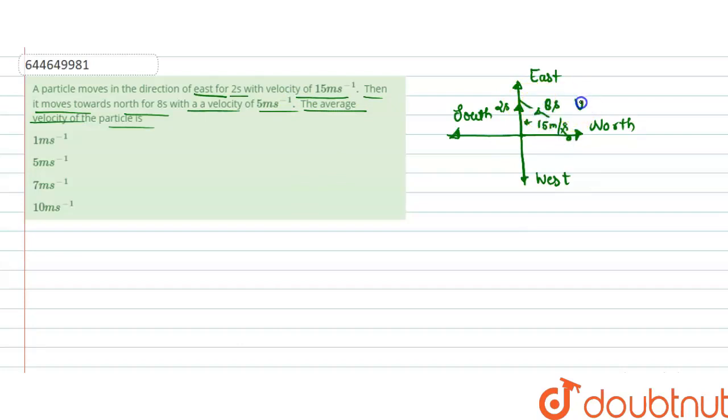So we draw a triangle. This distance is 30 meters, according to Pythagoras theorem this is 50 meters, and this is 40 meters.